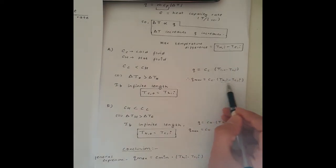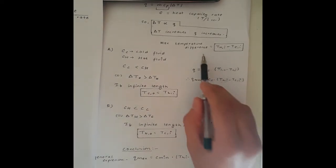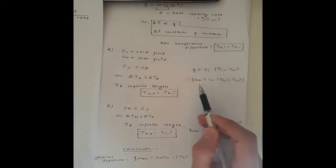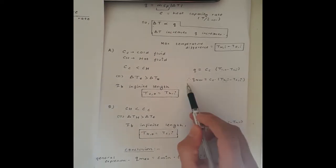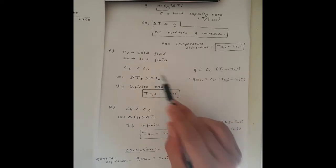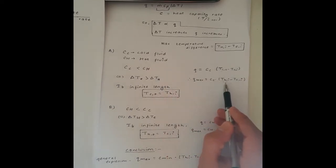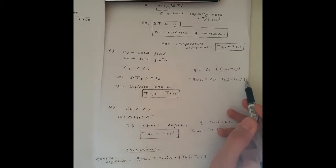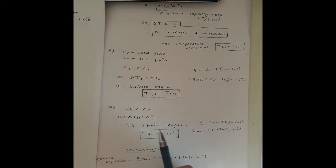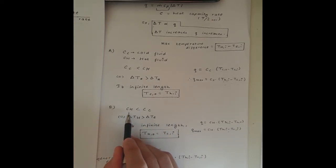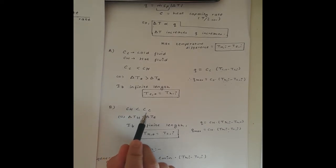The heat transfer expression for the cold fluid is Q = CC × (TCO − TCI). With infinite length, TCO equals THI, so the temperature difference equals (THI − TCI), which is the maximum temperature difference. Therefore, the maximum heat transfer rate for the cold fluid is Q_max = CC × (THI − TCI).